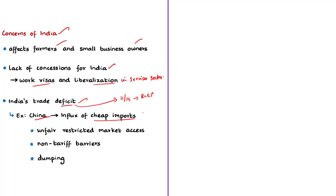Another concern is India's trade deficit and how those deficits would expand under the RCEP. India currently has deficits with 11 out of the 15 other member states of RCEP. The critical concern is the China factor — India fears the influx of cheap Chinese imports, which would affect India's manufacturing sector and go against the Make in India program. The Minister for External Affairs argued that India has faced unfair restricted market access from China. The Foreign Secretary pointed to millions of non-tariff barriers in China and also accused China of dumping — selling Chinese products at a lower price in India while selling the same product at a higher price in China itself.